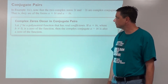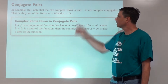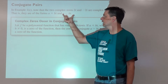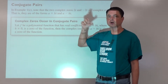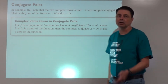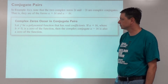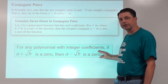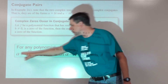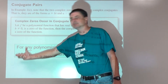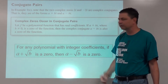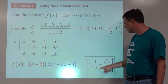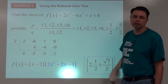Conjugate pairs: if we do get complex zeros, they will occur in conjugate pairs — like 2i and negative 2i, or 7 plus 5i and 7 minus 5i. All complex zeros occur in conjugate pairs, as long as our polynomial has integer coefficients. This also applies to irrational zeros: if a plus the square root of b is a zero, then a minus the square root of b must also be a zero — as we saw with 1 plus and 1 minus the square root of 7 over 2.